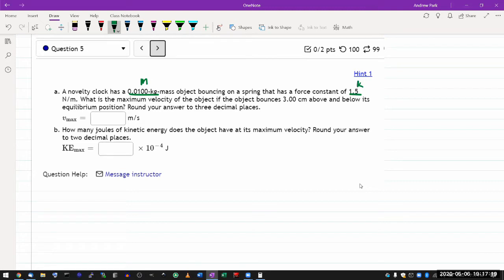What is the maximum velocity of the object if the object bounces 3.0 centimeter above and below its equilibrium position?